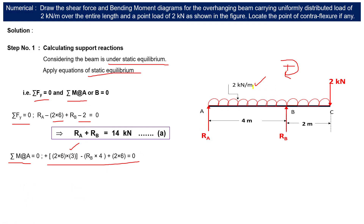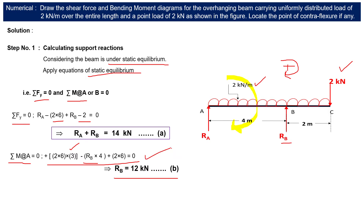RB acts vertically upward, giving an anti-clockwise moment, so we have minus RB × 4. The concentrated load at C also creates a clockwise moment: 2 × 6. Solving this equation gives RB = 12 kN, and substituting back gives RA = 2 kN.